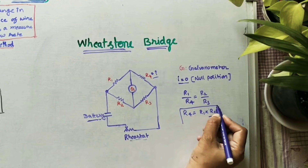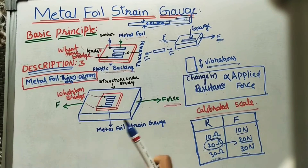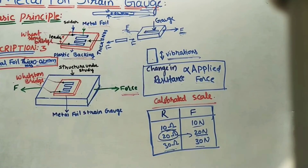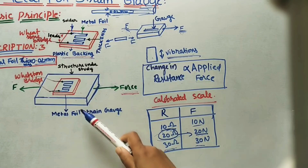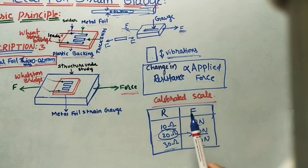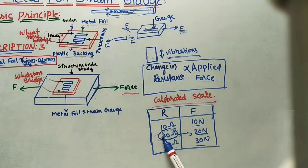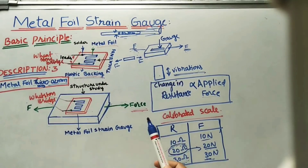By taking the Wheatstone bridge resistance, we can find the force using a calibrated scale. For every gauge, we prepare one calibrated scale. For example, if the Wheatstone bridge gives 10 ohms resistance of this foil, the applied force is 10 newtons. If it is 20 ohms, the applied force is 20 newtons. If it is 30 ohms, the applied force is 30 newtons. So by using this scale we can find the applied force value correctly.